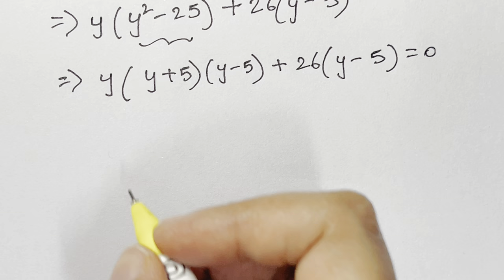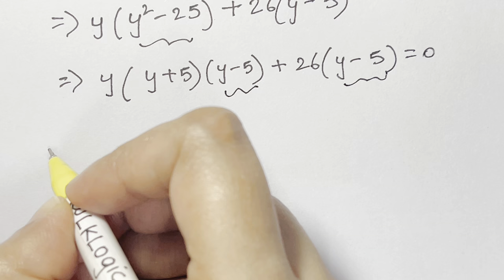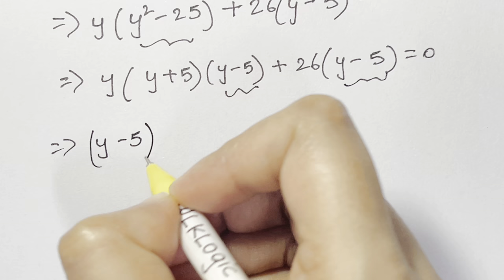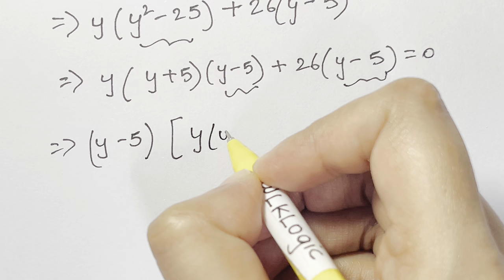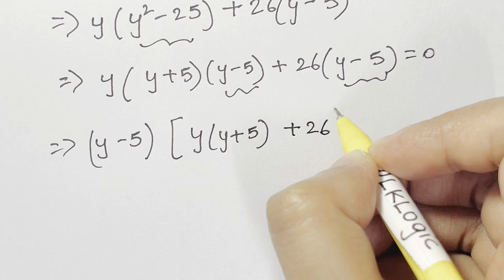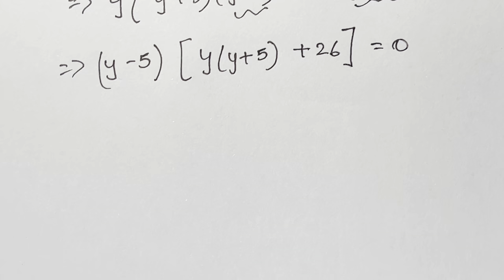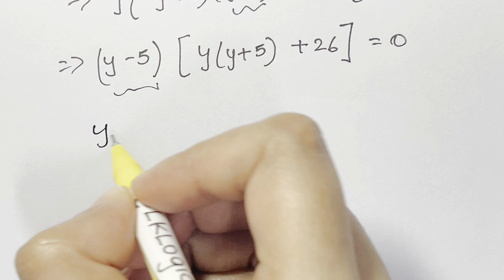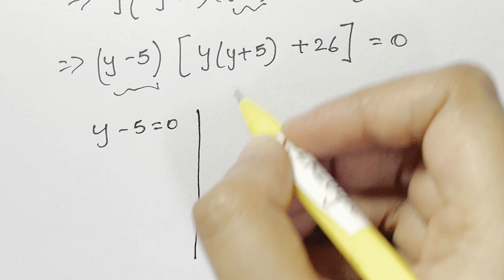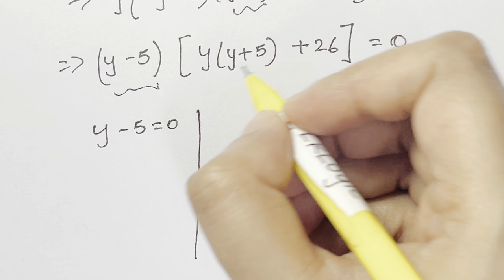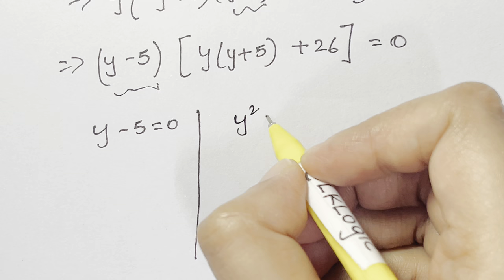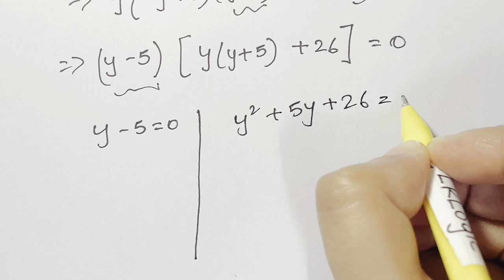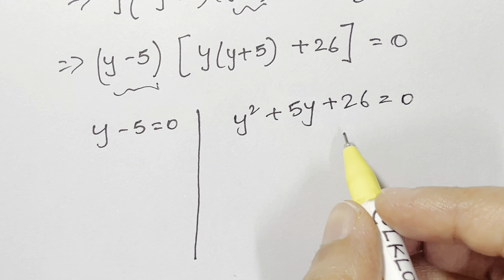Now I have (y minus 5) as a common factor, so I take that out: (y minus 5) times [y(y plus 5) plus 26] equals 0. Expanding inside: (y minus 5)(y squared + 5y + 26) equals 0. From the first factor, y minus 5 equals 0 gives y equals 5. The second factor y squared + 5y + 26 equals 0 is a quadratic.